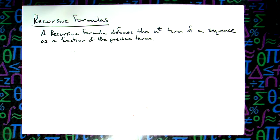So, nice formal definition: a recursive formula defines the nth term of a sequence as a function of the previous term. So whatever I get from my previous term, I'm going to use it to generate the next term. That's why it's considered to be a function of the previous term, because you're using the answer from the previous term.